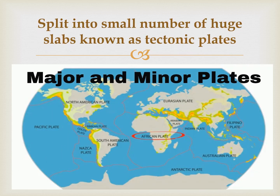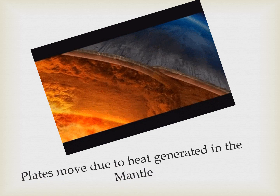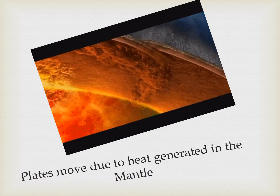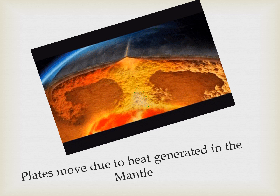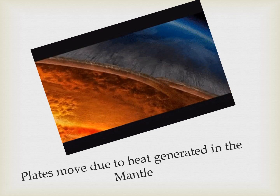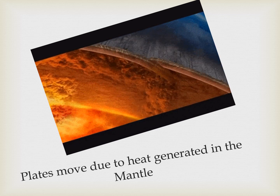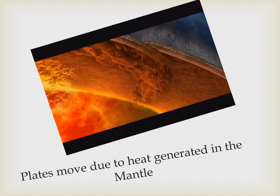The lithosphere is split into a small number of huge slabs known as tectonic plates. There are seven major and fourteen minor plates. These plates move due to the heat generated in the mantle, which is called convection current. When this convection current moves in the upper portion of the mantle, these plates move in different ways.